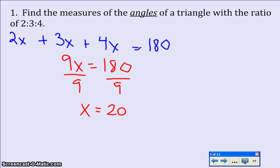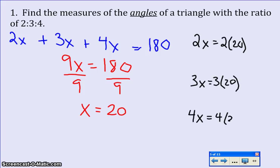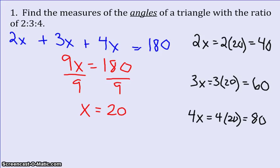Well remember, one angle was represented by 2x, another was represented by 3x, and the last one was represented by 4x. So let's simply replace x with 20. So then I end up with 2 times 20, which is 40, 3 times 20, which is 60, and 4 times 20, which is 80. So that would be the measures of my three angles.